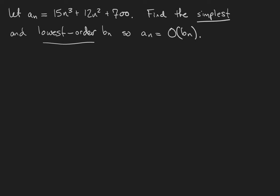Here's a sequence an which is equal to 15 times n cubed plus 12 times n squared plus 700. We want to find the simplest and lowest order bn such that an is big O of bn. So notice I say simplest and lowest order. Here's what I mean by that.